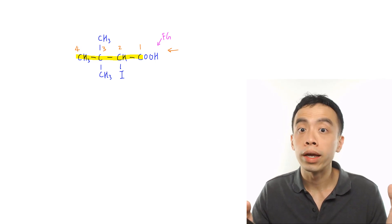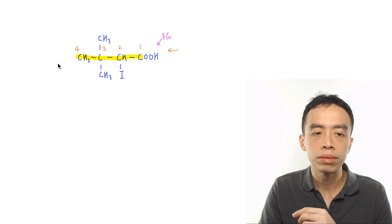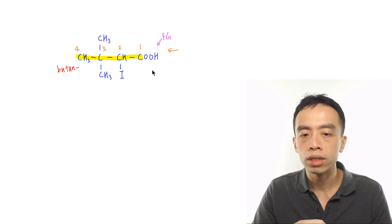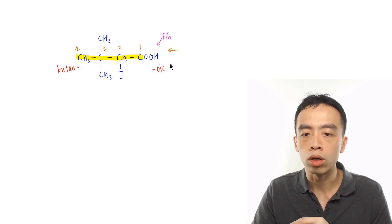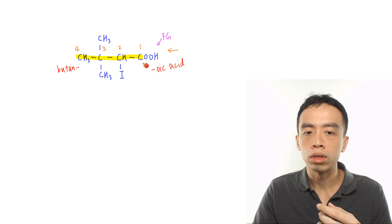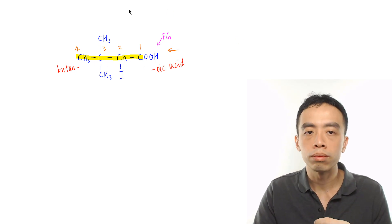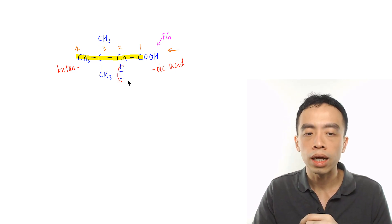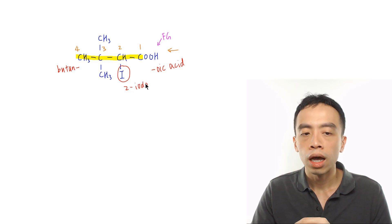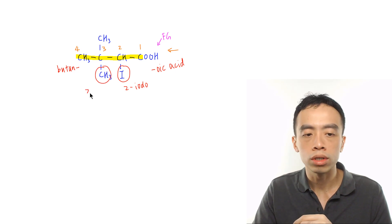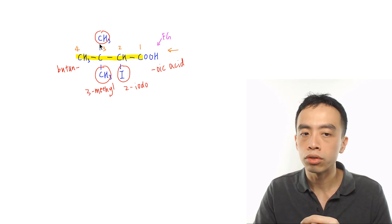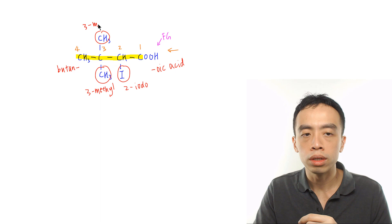Then we can name the parent and the functional group. For four carbons, this will be butane, which represents four carbons. The acid functional group name ends with -oic acid, so this is essentially our butanoic acid. The next thing we have to worry about are our substituents. The halogen is attached to position two, so I'll call this a 2-aldo group. I have one methyl group attached to carbon three, so this will be a 3-methyl. I have another methyl group also attached to carbon three, so this will also be a 3-methyl group.